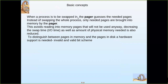When a process is to be swapped in, the pager guesses which pages are needed. Instead of swapping the whole process, only the needed pages are brought into memory. This avoids reading pages that will never be used, decreasing swap time and reducing the amount of physical memory needed. To distinguish between pages in memory and pages on disk, hardware support is needed alongside the page table — specifically a valid/invalid bit.